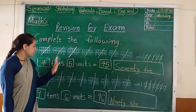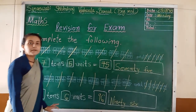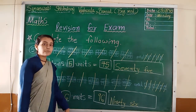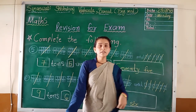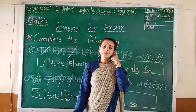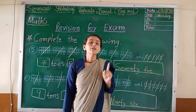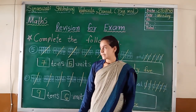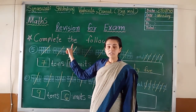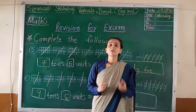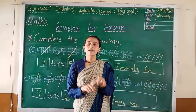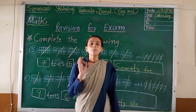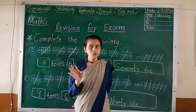So this way you have to write tens and units, and the number name. With this I will give you one worksheet. Then you have to write and do more practice. This topic — complete the following, then smallest to largest numbers. Prepare it carefully. Understood?